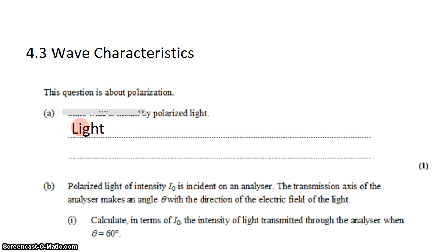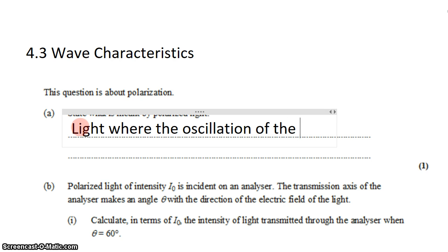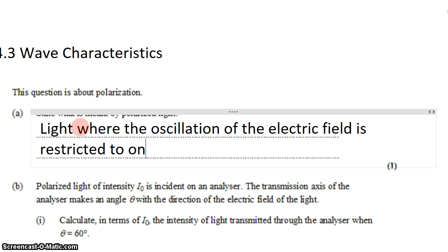Polarized light is light where the oscillation of the electric field is restricted to one dimension only. Light is the oscillation of two perpendicular fields — an electric field and a magnetic field. In polarized light, we restrict the electric field so it can only oscillate along one line: up and down, right to left, diagonally — but just one. Normally, unpolarized light oscillates in all kinds of different combinations of dimensions simultaneously, but if we restrict it to one dimension only, it becomes polarized.